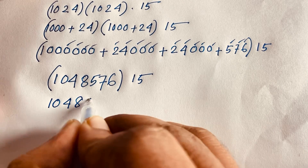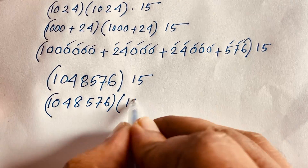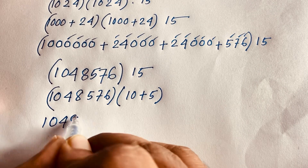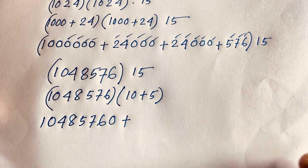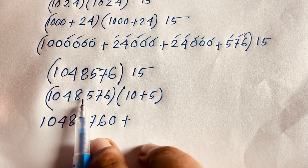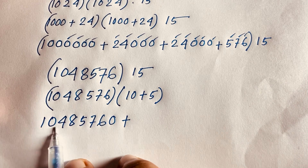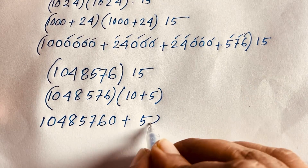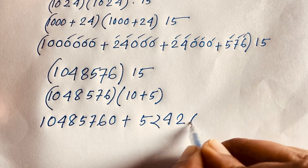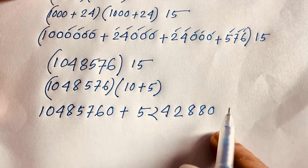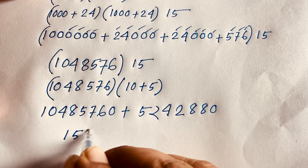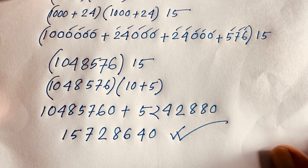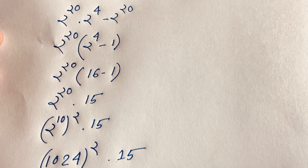To multiply by 15, we use the fact that 15 equals 10 plus 5. So 1,048,576 times 15 equals 1,048,576 times 10 plus 1,048,576 times 5. Since multiplying by 5 is the same as dividing by 2 then multiplying by 10, we get 5,242,880 plus 10,485,760, giving a final answer of 15,728,640. This is the value of the maths olympiad question. Thank you all — if you enjoyed this video please subscribe to my channel. Goodbye, take care.